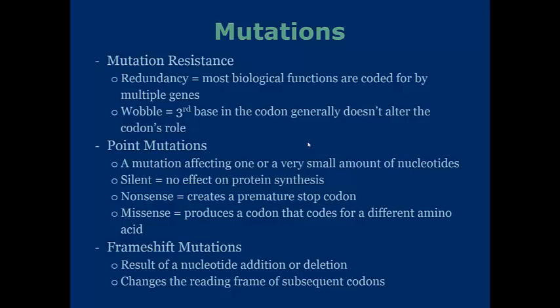A point mutation is noted as a mutation that affects one or a very small amount of nucleotides, and there are three types in particular. Silent ones have no effect on the protein synthesis. This often happens at the wobble position.